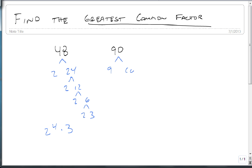90, I see the 9 and the 10 real easy. Well 9 is 3 and 3, and 10 is 2 and 5. So this becomes 2 to the 1st times 3 squared times 5 to the 1st. We're going to write these 1s in for an important reason, because we want to know how many 2s there are, how many 3s there are, and how many 5s there are in each one.